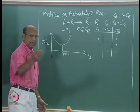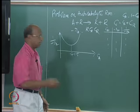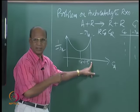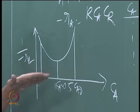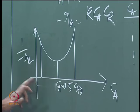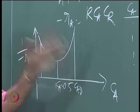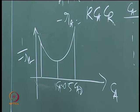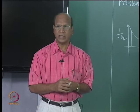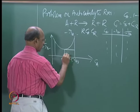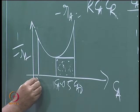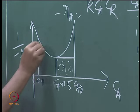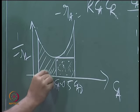The problem asks for 90 percent conversion, so C_A must be 0.1. That means somewhere here this is C_A naught on the curve. Now all the problems can be solved if you plot this and find out what is tau. For a single MFR, the area is this rectangle; for PFR at 90 percent conversion, it is this entire area under the curve.